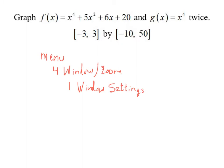You can access these controls by going to the menu button, option 4 window zoom, option 1 window settings. You should see ways that you can enter an x min and x max, then a y min and y max. Pause the video and see if you can get these two graphs on your calculator.